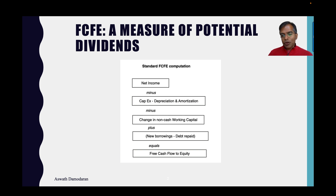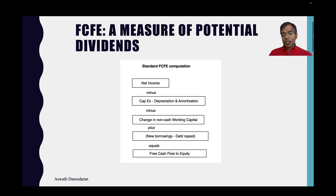If you net those two items out — capex versus depreciation and amortization — you have what's called net capex. That's a measure of how much the company is putting back into the business.